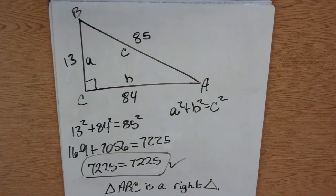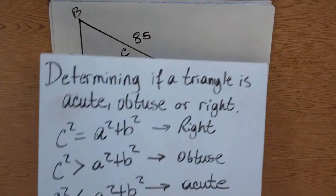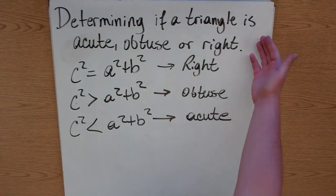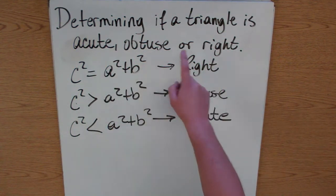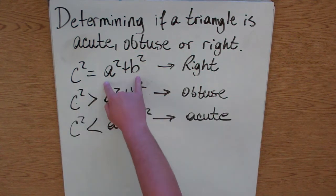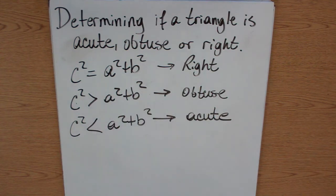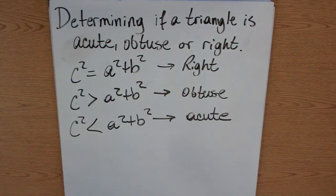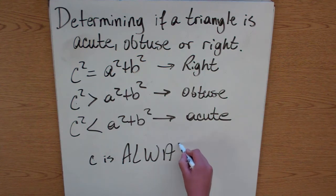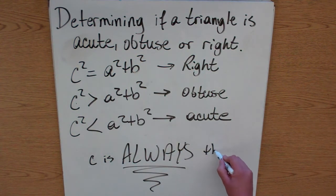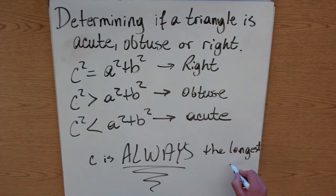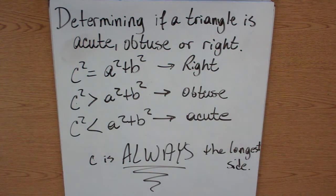We can also determine whether a triangle is acute, right, or obtuse. If c squared equals a squared plus b squared, it's a right triangle. If c squared is greater than a squared plus b squared, it's an obtuse triangle. If c squared is less than a squared plus b squared, it's an acute triangle. Remember, c is always the longest side.